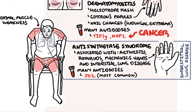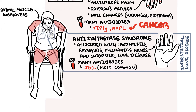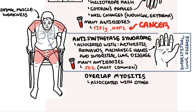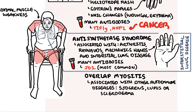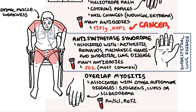Overlap myositis is also associated with skin changes such as those seen in dermatomyositis. People who have overlap myositis usually have an underlying autoimmune disease, such as Sjögren's, Lupus, or Scleroderma, with unique antibodies such as PM-SCL, RO52, ANTI-KU, and U1-RNP.